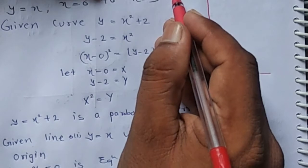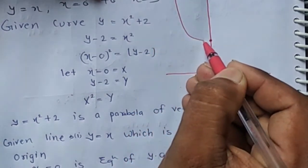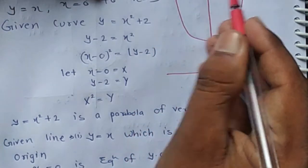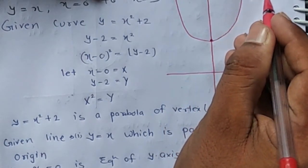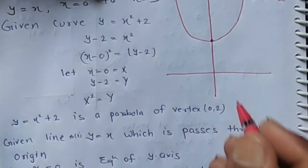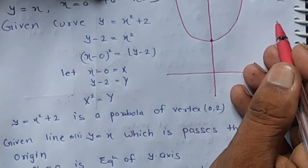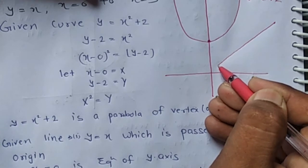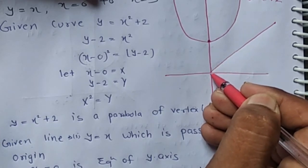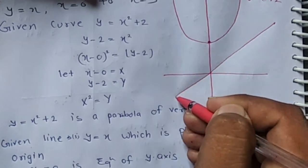y equals x squared plus 2 is this curve. Line y equals x passes through the origin, and the slope of this line is 45 degrees.